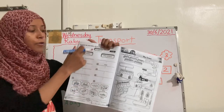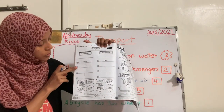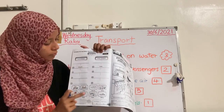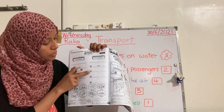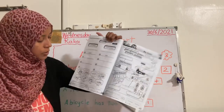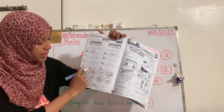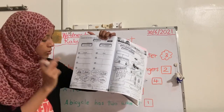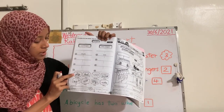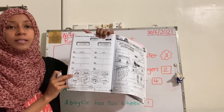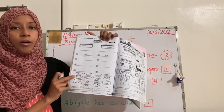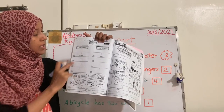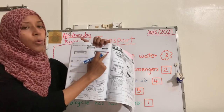For land transport you have four, and for water transport you also have four — so there are eight transport types in total. You need to look at each picture and identify what it is. For example, picture number one: what do we call this? We call it bicycle. So is bicycle land transport or water transport?